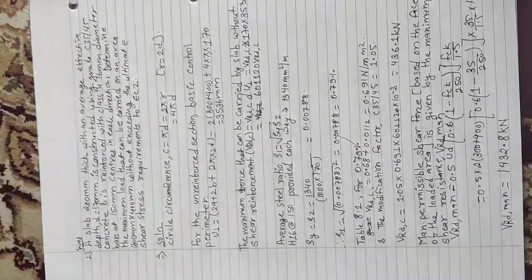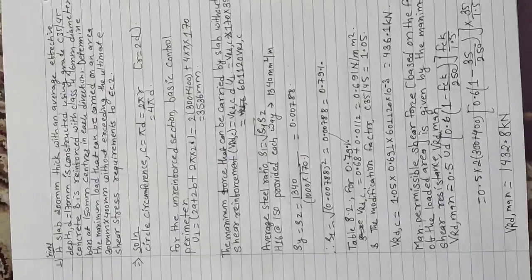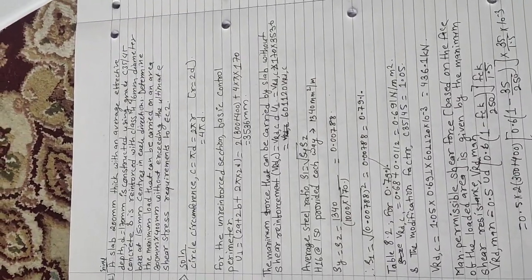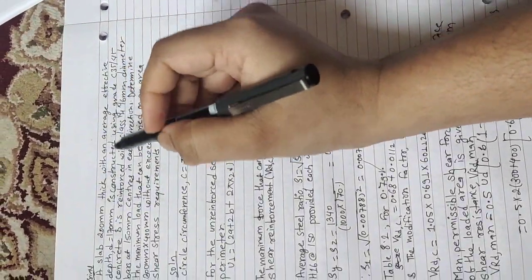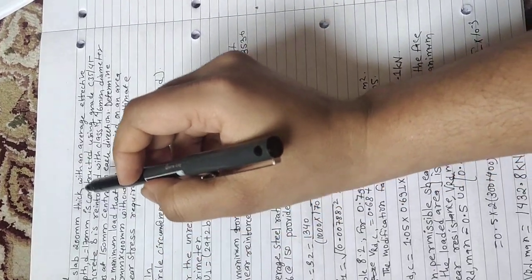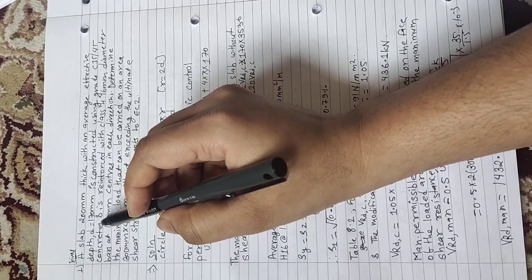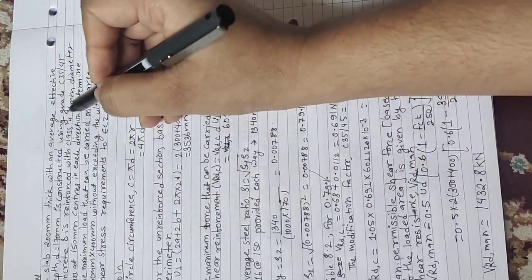Hello, this is another example of punching shear. A numerical problem: slab 200 mm thick with an average effective depth of 170 mm is constructed using grade C35/45 concrete, and reinforcement is Class 60.